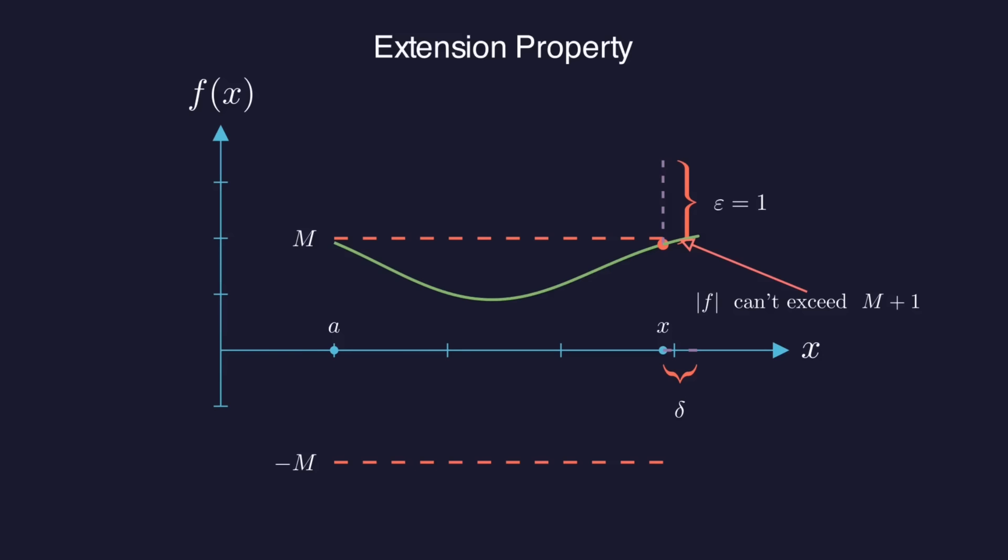Well, that means the magnitude of F on this tiny extension function can't get any bigger than big M plus 1. You can show this rigorously with a triangle inequality, but I think this is pretty intuitive. Okay, so we've extended our interval a slight amount and the function is still bounded on this bigger interval, even though it's a different bound. But that's okay. We've satisfied the extension property.